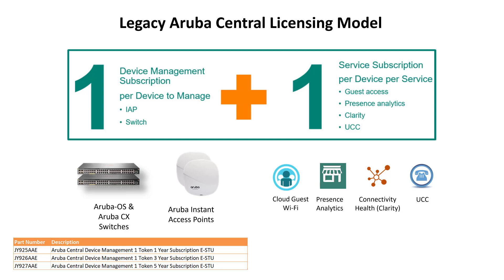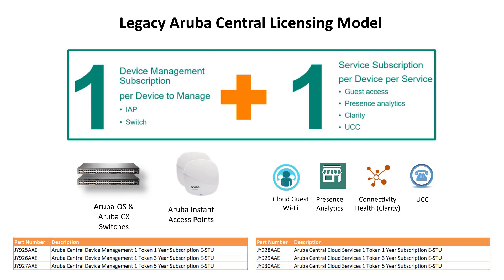In order to enable additional services like Cloud Guest or Presence Analytics, you had to order enough service tokens to cover the number of devices for each service you were planning to use. The service token SKU was generic and could be used to activate any of the services in Central.